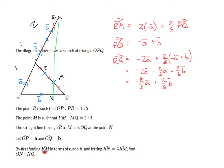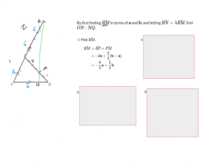And then when you tidy that up, you end up with minus eight-thirds of vector a plus two-thirds vector b. So far, I've done this little bit here, working out my vector R M. And that's my solution here. And it's in terms of a, vector a, and vector b.